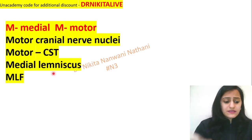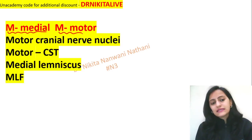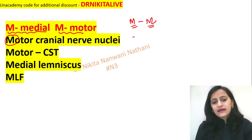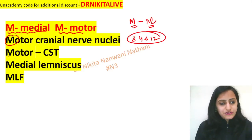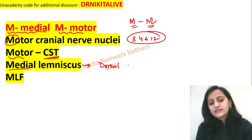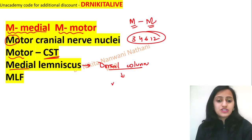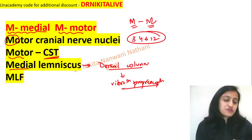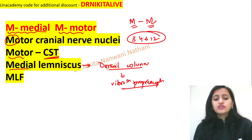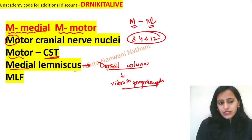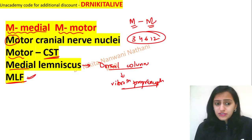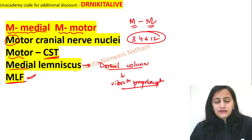The next very important mnemonic: medial brainstem syndromes are motor — M for medial, M for motor. In medial brainstem syndromes, the motor cranial nerve nuclei — that is 3, 4, 6, and 12 — are affected. The motor tract, meaning the corticospinal tract, is also affected. The medial lemniscus, which is formed by the dorsal column carrying vibration and proprioception, will also be lost. And the MLF is affected in medial brainstem syndromes.